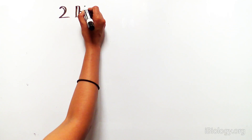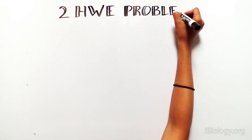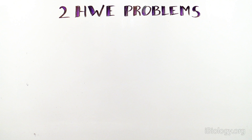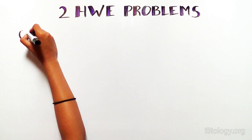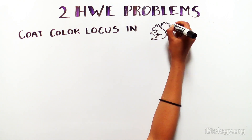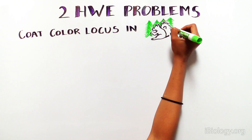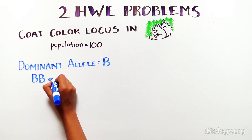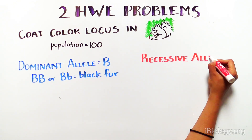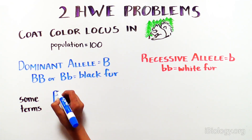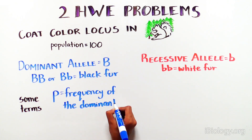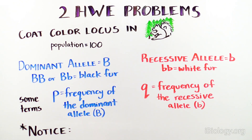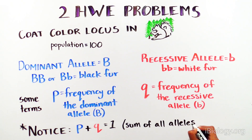Let's go through two related examples of Hardy-Weinberg equilibrium problems and learn how to calculate allele and genotype frequencies, as well as start thinking about why a population may or may not be evolving. Example number one: you are studying the coat color locus for a population of 100 squirrels living in a forest along the coast of California. The dominant allele, capital B, gives black fur, while lowercase b, the recessive allele, gives white fur. In population genetics, we call the frequency of the dominant allele P and the frequency of the recessive allele Q, and the sum of these allele frequencies must equal one.